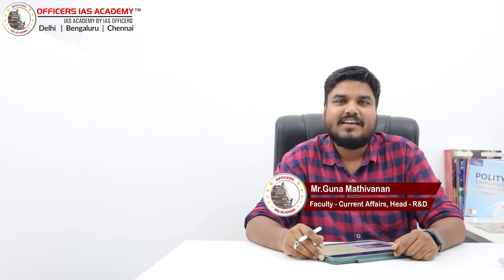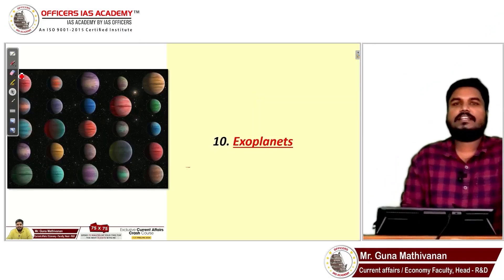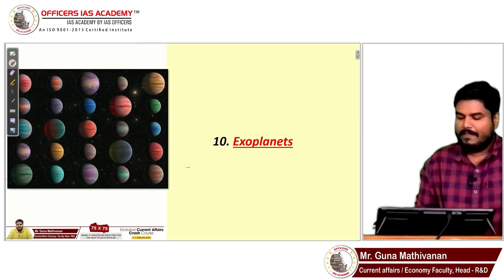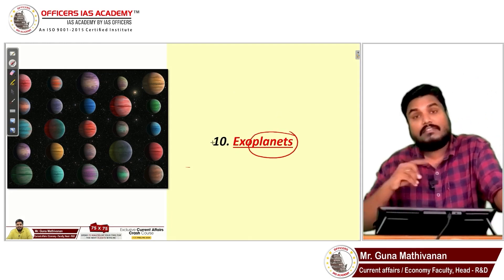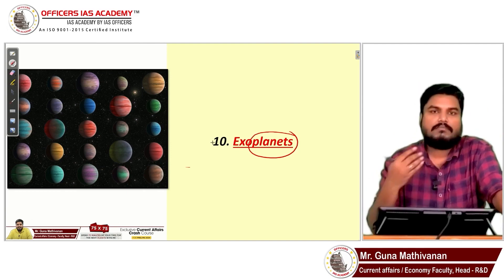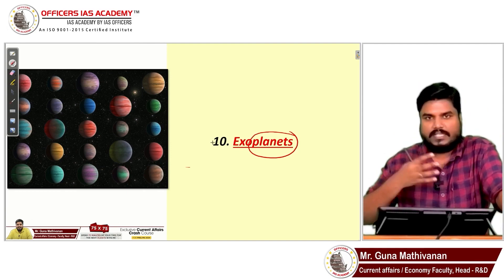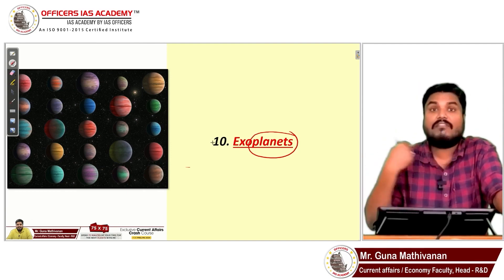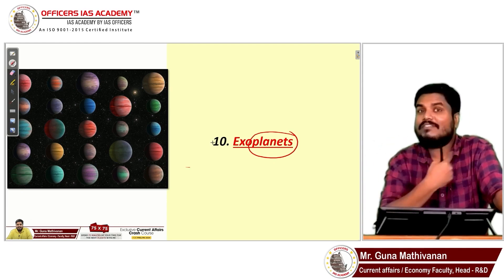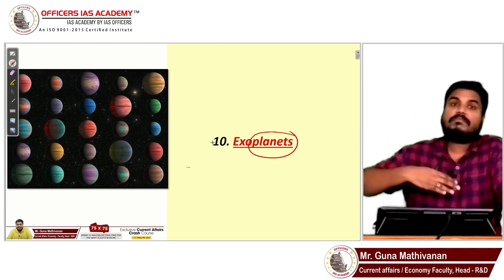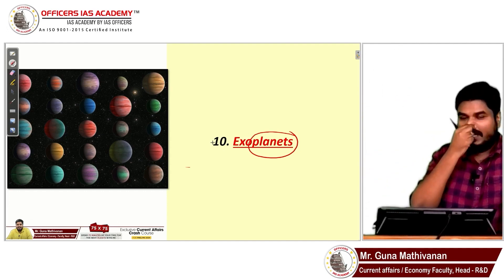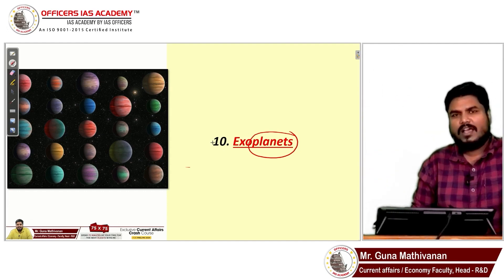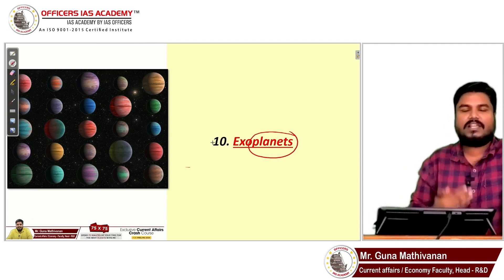In this video we are going to discuss about exoplanets. These are planets which orbit around other stars. Mercury, Venus, Earth, Mars, Jupiter, etc. come around our Sun, but there are planets which come around other stars — those are called exoplanets.